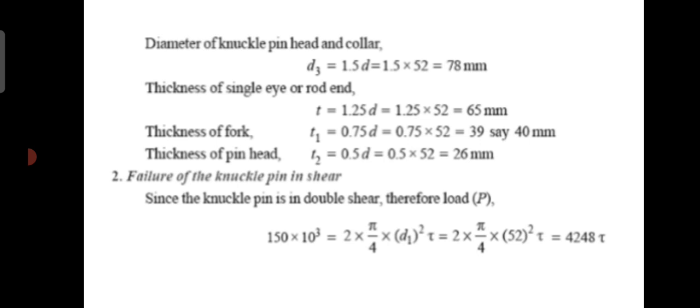Failure of the knuckle pin in shear. Since the knuckle pin is in double shear, the load P equals 2 × (π/4) × d1² × tau. Substituting P equal to 150 × 10³ and d1 equal to 52, we find tau equal to 35.3 N per mm², that means 35.3 MPa.